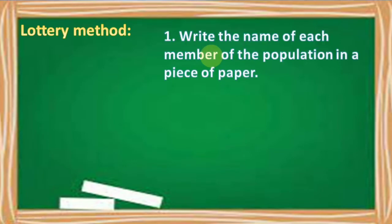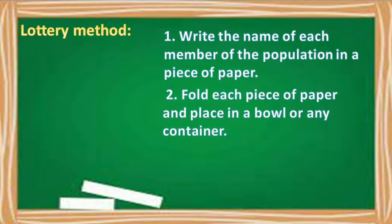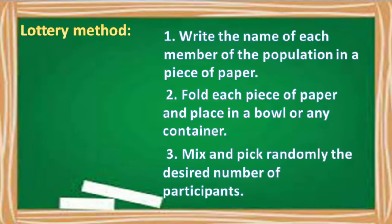Let us list down the steps in the lottery method. The first one, write the name of each member of the population in a piece of paper. Number two, fold each piece of paper and place in a bowl or any container. Number three, mix and pick randomly the desired number of participants.